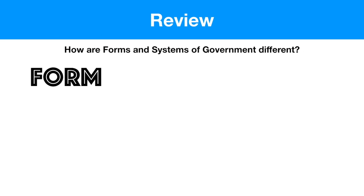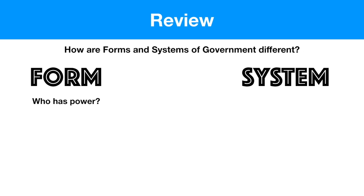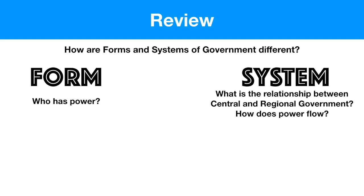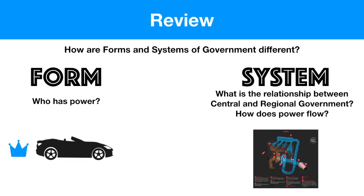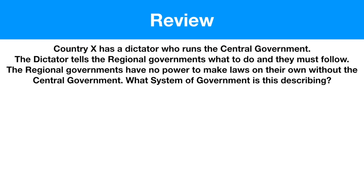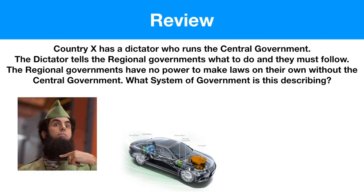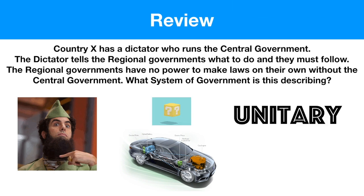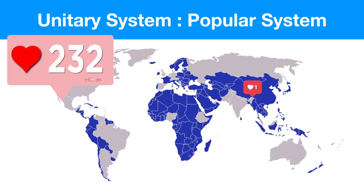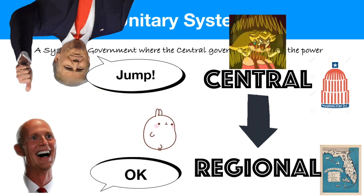Let's review. Forms and systems of government are different: forms ask who has power, while systems focus on the relationship between central and regional governments and how power flows. Here's a scenario question you'll see on your test: Country X has a dictator who runs a central government. The dictator tells the regional governments what to do and they must follow. The regional governments have no power to make laws on their own. What system of government is this? The correct answer is unitary — the most popular system in the world, where the central government tells everyone else what to do.